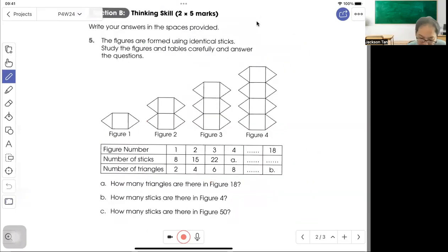Question 5. The figures are formed using identical sticks. Study the figures and answer the questions carefully. Part A asks how many triangles are there in Figure 18? Look for the pattern: triangles go from 2, 4, 6, 8. It's a multiple of 2. So for Figure 18, it's 18 times 2, which is 36.